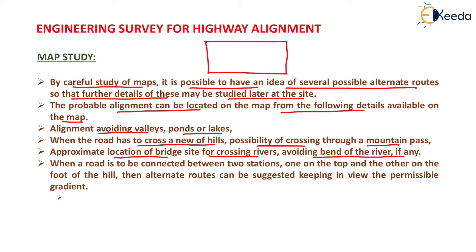Suppose that we have to connect two points by a particular road, so we will finalize a set of alignments like this. After selecting a particular set of alignments along these two points, we need to select at least one or two alignments which will carry the maximum traffic as well as which will have the minimum number of obstructions.